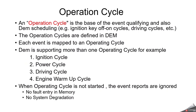Operation cycle is the base for event qualifying and DEM scheduling. Examples include ignition cycle, power cycle, driving cycle, and engine warm-up cycle. The operation cycles are defined in DEM; each event is mapped to an operating cycle and DEM supports more than one operating cycle. When the operating cycle is not started, event reports are ignored — meaning no fault entry in memory and no system degradation. For more about operation cycles, you can watch the complete DEM playlist.